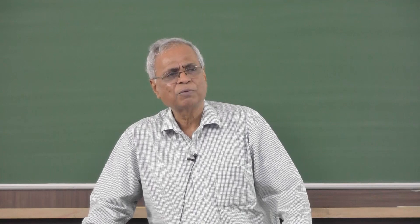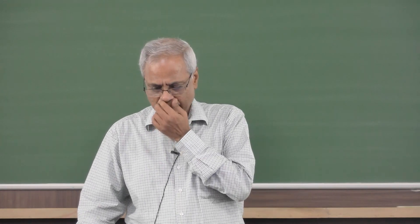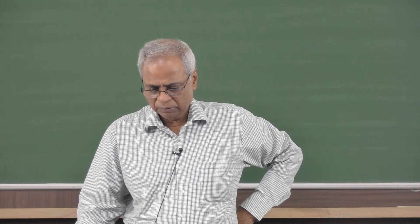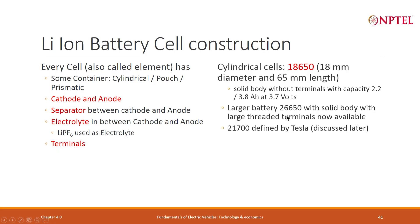There is another called the 26650, which is 26 mm in diameter and 65 mm in length — a solid body with large threaded terminals. This was used for a short time for hand tools. Then Tesla came with the 21700 — it is a 21 mm diameter cell. The length is approximately 70 mm. This will be discussed later again.